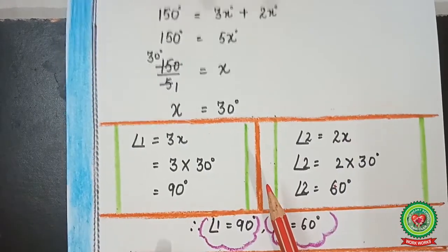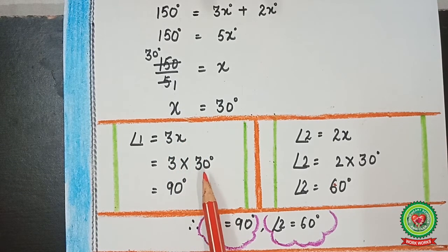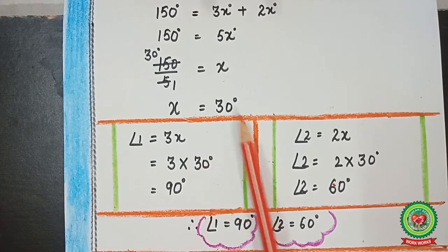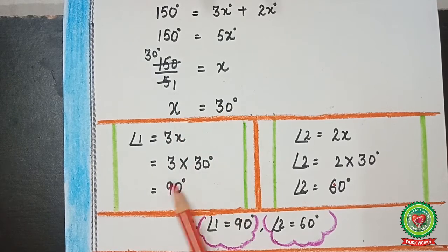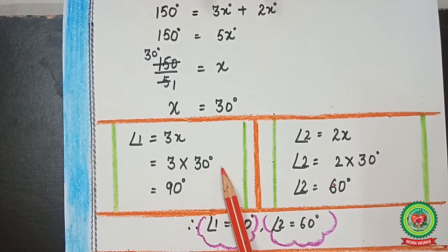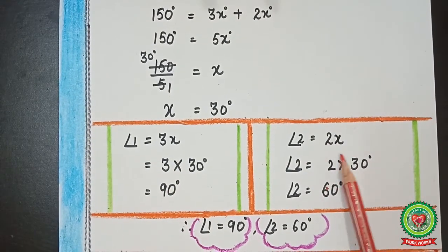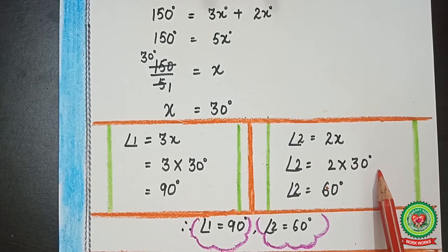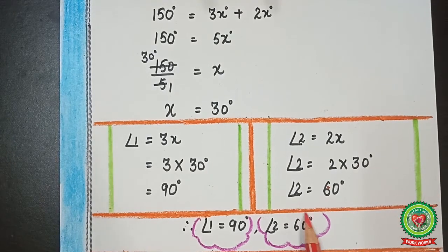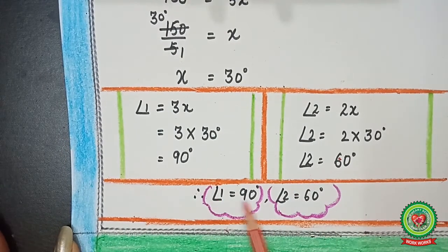Angle 1 = 3x = 3 × 30 = 90°. Angle 2 = 2x = 2 × 30 = 60°. So the answers are: angle 1 = 90° and angle 2 = 60°.